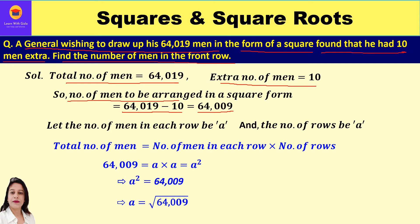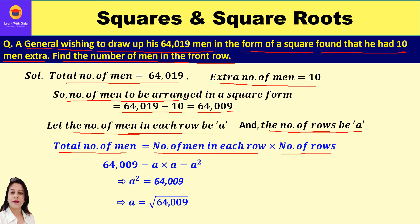When arranging in a square, the total number of rows and men per row must be equal. Let the number of men in each row be a and number of rows be a. Total men = a × a = a squared = 64009. So a squared = 64009, and to find a we need the square root of 64009. Long division method is more suitable here.